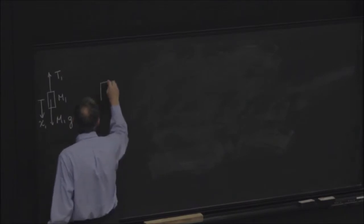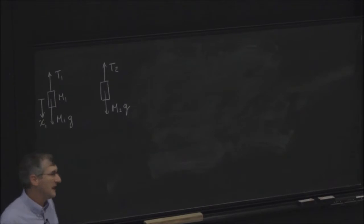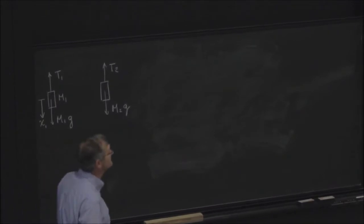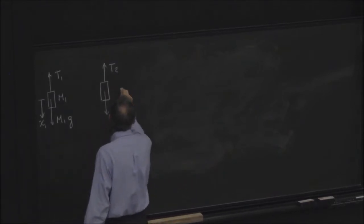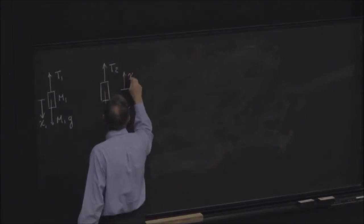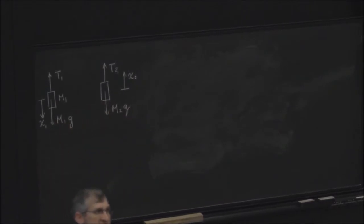And m2 looks a whole lot alike, except that if m1 goes down, I have to expect, unless the string is stretching, that m2 is going to be going up. So I'm going to use x2 being positive up to be consistent.